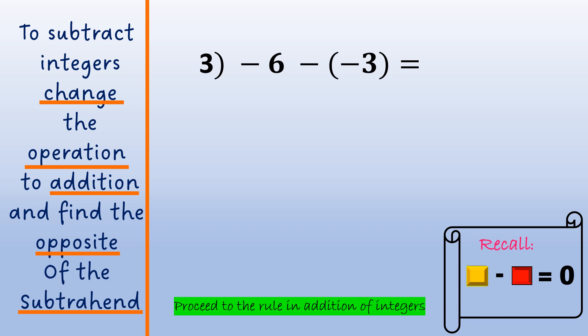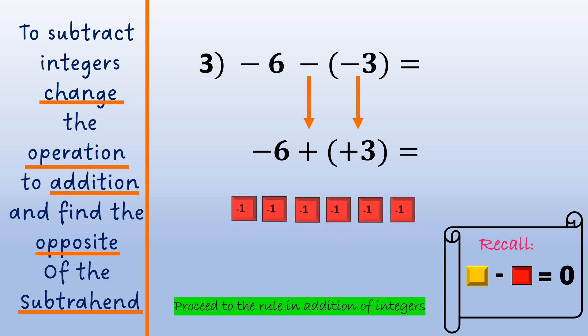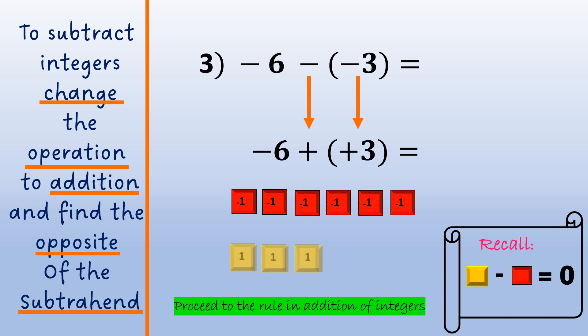Example number 3: negative 6 minus negative 3. Applying the rule for subtraction of integers, the minuend stays the same, so negative 6. The operation will change from subtraction to addition, and the opposite of our subtrahend, negative 3, becomes positive 3. To represent this expression, we have 6 red tiles to represent negative 6 and 3 yellow tiles to represent positive 3.